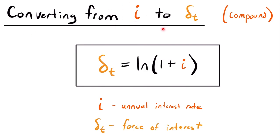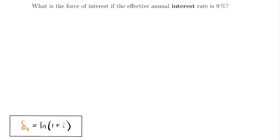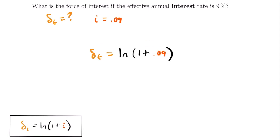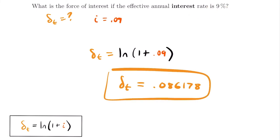Next, we're going to look at how to convert from an annual interest rate to the force of interest under compound interest. The formula is: δ = ln(1 + I). For our example, what is the force of interest if the effective annual interest rate is 9%? We know I = 0.09. So δ = ln(1 + 0.09) = ln(1.09). Plugging into our calculator gives δ = 0.086178. That is the equivalent force of interest given a 9% effective annual interest rate.